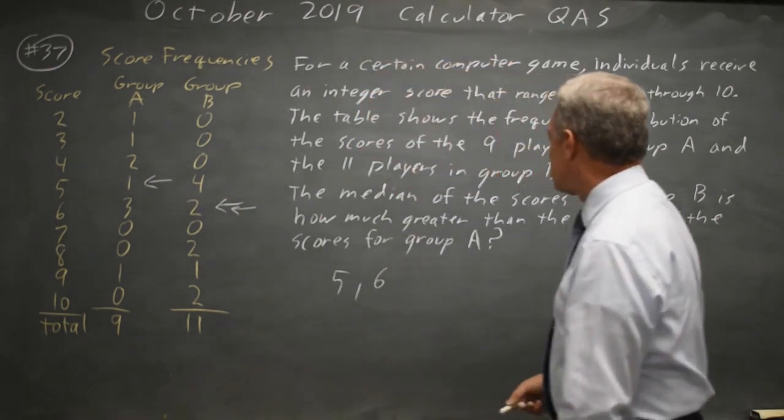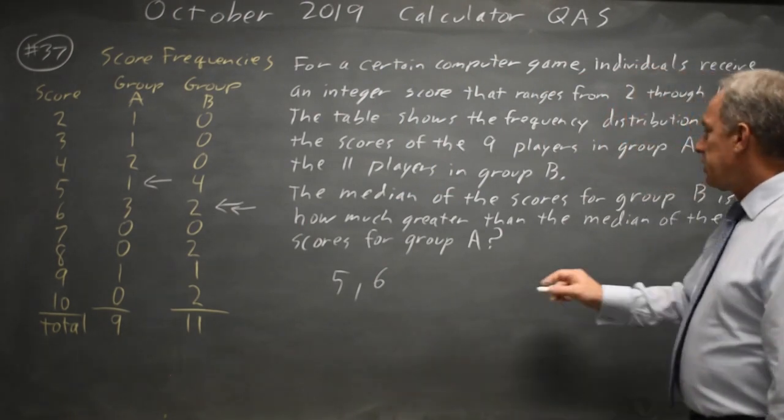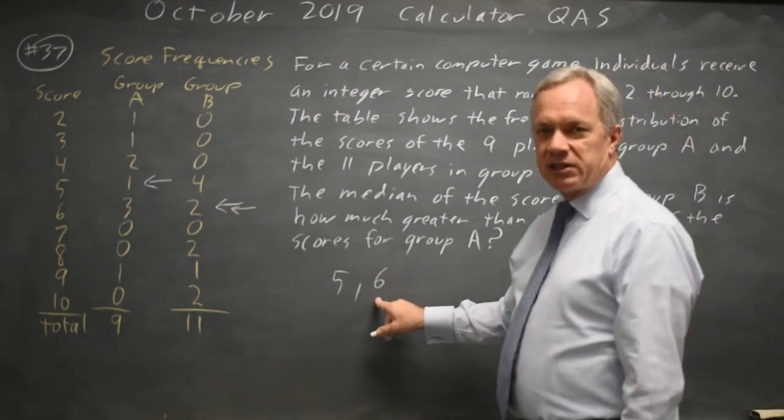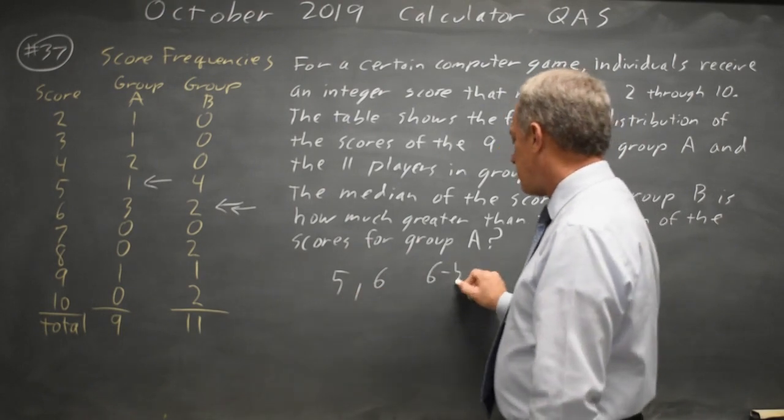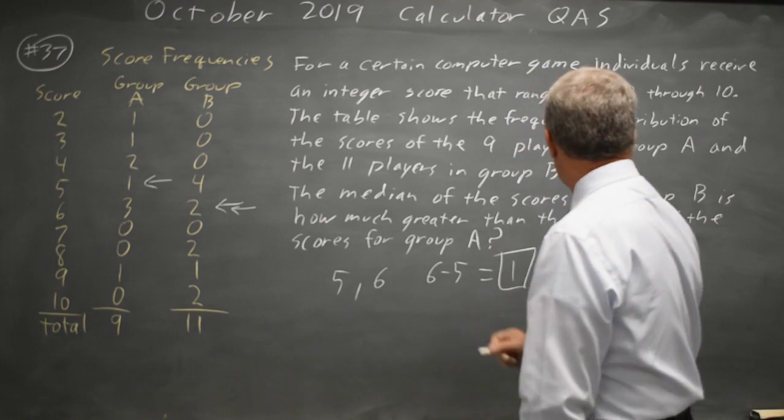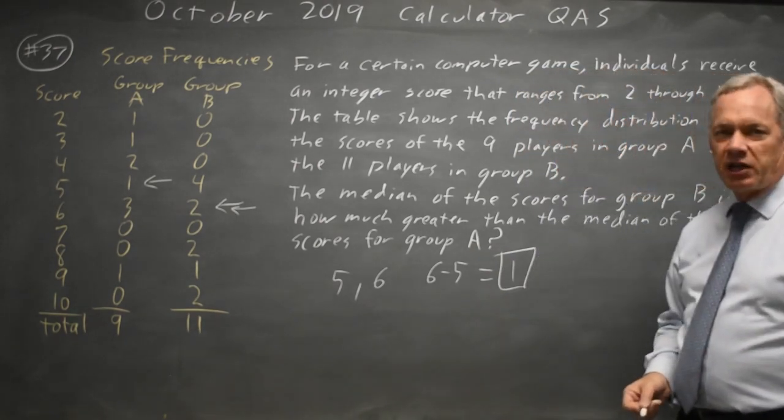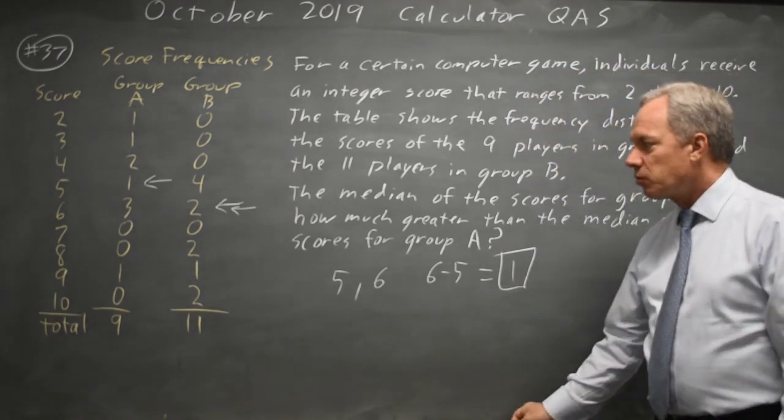And the difference, B has a median of six, which is one greater than the median for five. I'm sorry, the median for A. How much greater is the median for B than the median for A would be six minus five equals one.